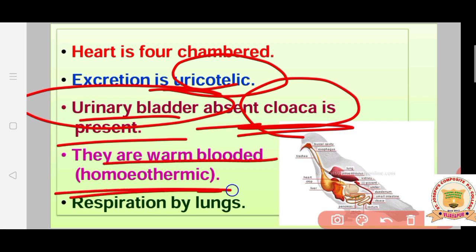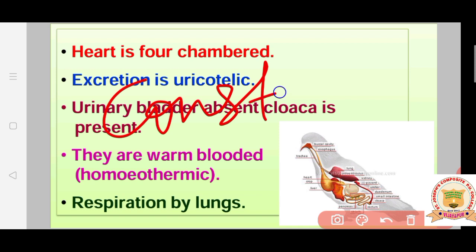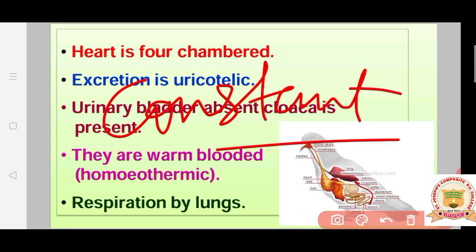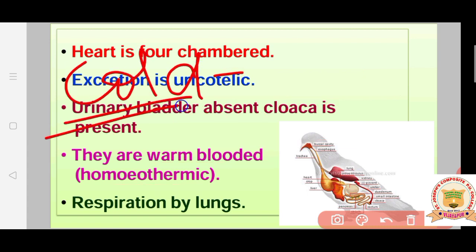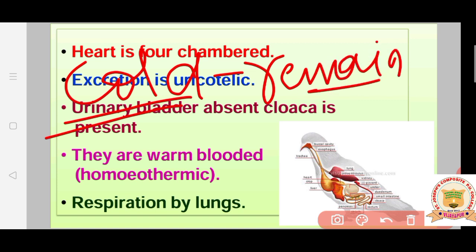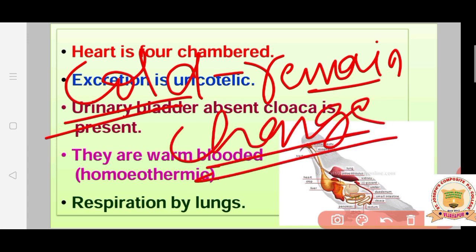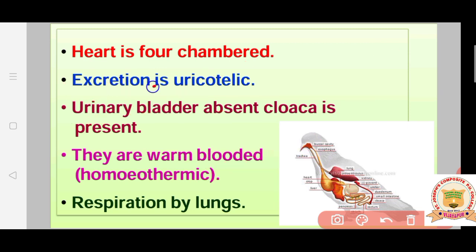Birds are warm-blooded, also called homeothermic — their body temperature always remains constant regardless of climatic conditions. This contrasts with cold-blooded animals seen in previous classes, whose body temperature changes with the environment. In warm-blooded animals, the temperature is always constant.